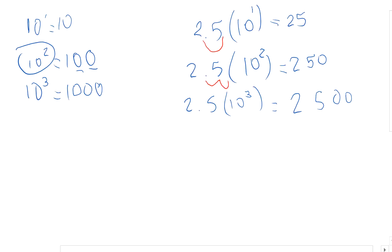What's so useful about this is that every time I multiply by a power of 10, if my exponent is positive, then I'm going to move that decimal point to the right.